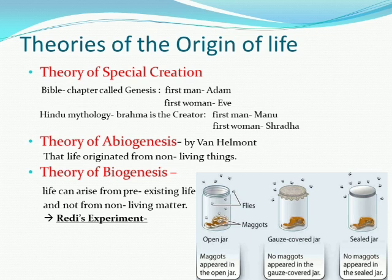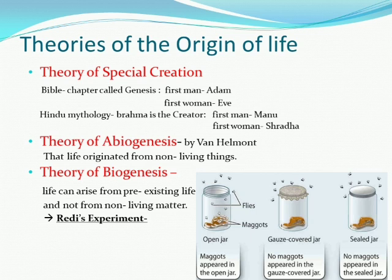God created Adam and Eve and brought them on earth — this was the assumption given by the theory of special creation. According to Hindu mythology, Brahma is the creator of the universe; the first man created was Manu and the first woman was Shraddha. These creations were made by God and placed on earth, representing the first living forms. However, there was no scientific proof, and so this theory was disapproved.